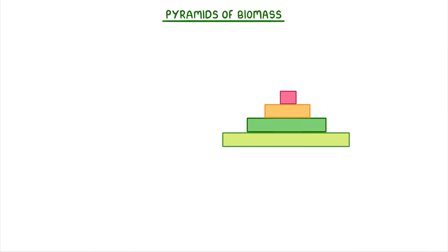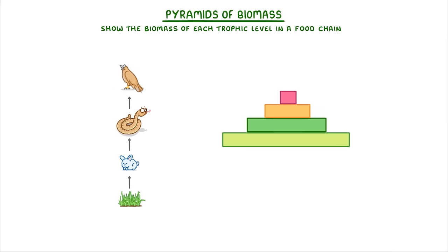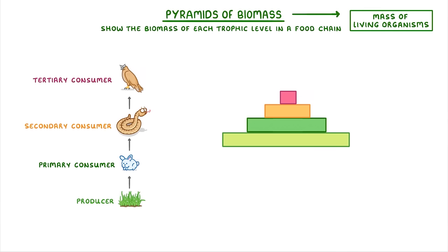In this video we're looking at pyramids of biomass, which show the biomass of each trophic level in a food chain. This pyramid here could represent a food chain like this, with grass as the producer, rabbits as the primary consumer, snakes as the secondary consumer, and hawks as a tertiary consumer. The term biomass just means the mass of living organisms.